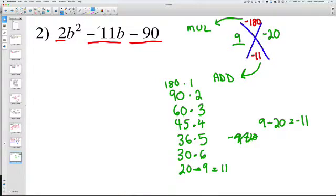Then we put them over our first coefficient, which is 2. Put this one over 2, the 9 over 2 doesn't reduce. However, this one does because you have 20 divided by 2. If you divide both sides by 2, it's going to be negative 10 over 1.